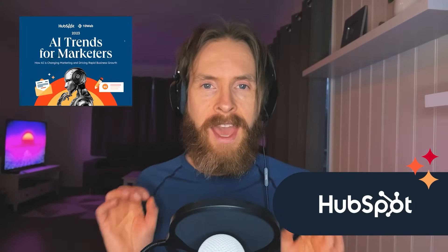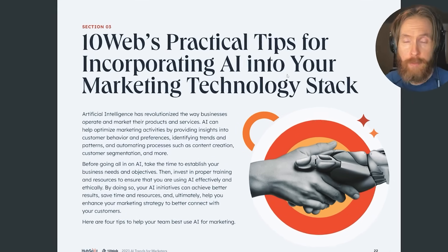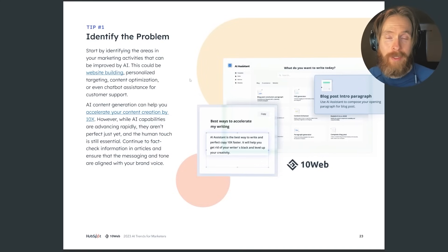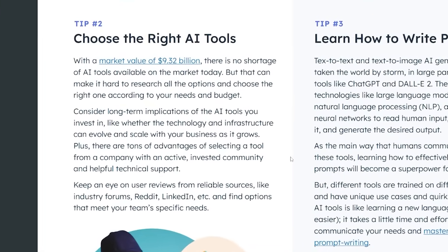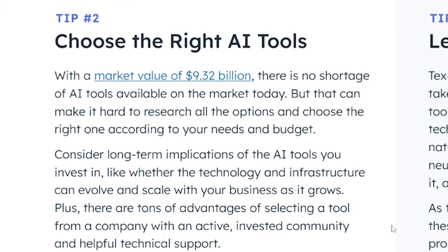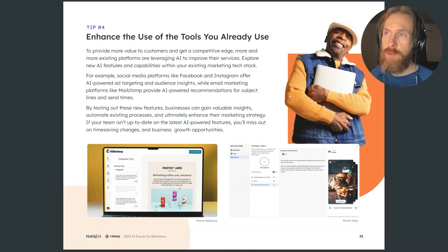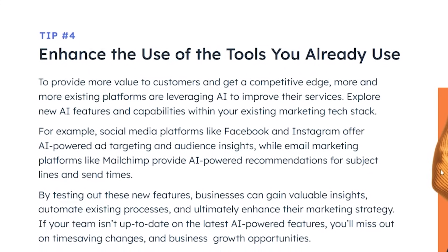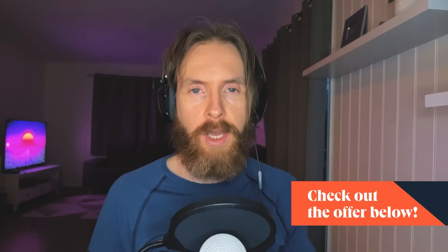Today's video is brought to you by HubSpot, and they are offering a peek into the future of marketing with their free ebook 'AI Trends for Marketers' — over 30 pages packed with insights, absolutely free. Some practical tips include: identify where you can use AI to improve your marketing; pick the right AI tools that fit your needs and budget; learn how to write prompts; and enhance tools you already use by exploring new AI features in your marketing tech stack. Click the link in the description below to download your free copy.